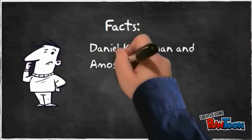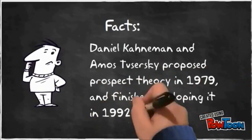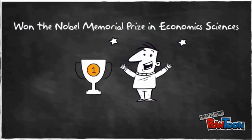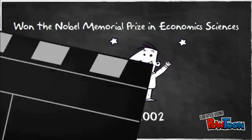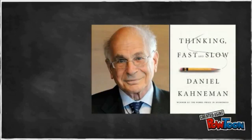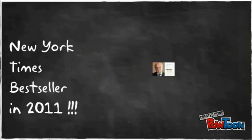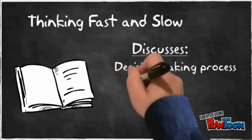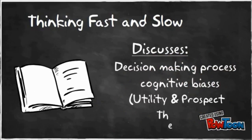Prospect Theory was proposed by Daniel Kahneman and Amos Tversky in 1979 and developed until 1992. Kahneman won the Nobel Memorial Prize in Economic Sciences in 2002 for Prospect Theory, changing modern economic theory forever. Kahneman wrote Thinking Fast and Slow, which was recognized by the New York Times in 2011 as a bestseller. His book discusses decision-making processes as well as several cognitive biases including Utility Theory and Prospect Theory.